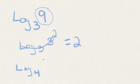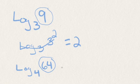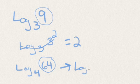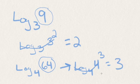One more easy example: log base 4 of 64. Again, we're going to want to rewrite the big number as something else with the same base as we see below. So log base 4 of 4 to the third power. The logs and the 4s cancel out and we're left with 3. All we're doing is taking the big number and rewriting it as this base to some exponent — if you can figure out that exponent, you have your simplification.